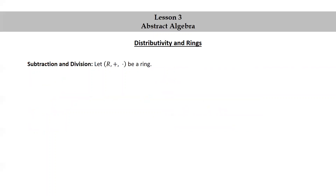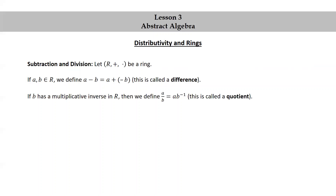Subtraction and division: let (R, +, ×) be a ring. If a and b are in R, we define a − b to be a + (−b); this is called a difference. If b happens to have a multiplicative inverse in R, then we define a/b to be a × b⁻¹, where b⁻¹ is the multiplicative inverse. This is called a quotient.